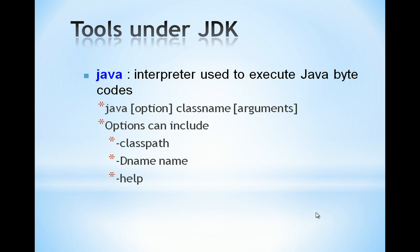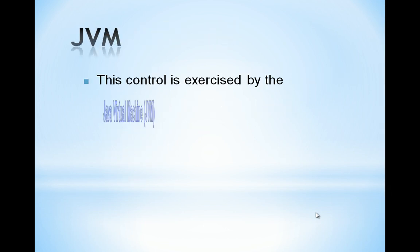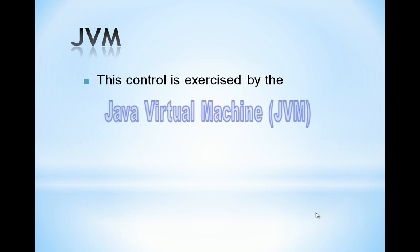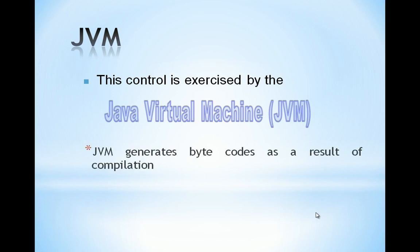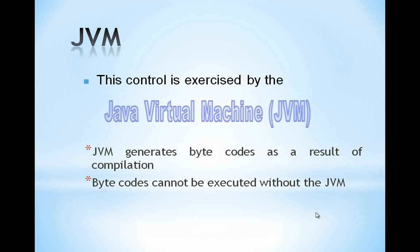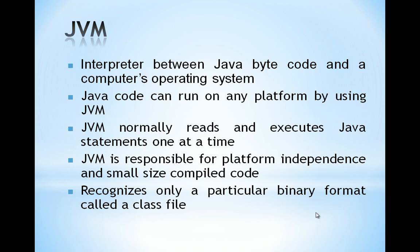The options refer to your class path or directory path. The main role in executing a Java program is played by the JVM — Java Virtual Machine. JVM generates bytecode as a result of compilation. Whenever you compile the program using the javac command, bytecode is generated. This bytecode cannot be executed without the JVM. In all operating systems, JVM is available by default, therefore on all operating systems you can run your Java program. JVM is the interpreter between the Java bytecode and the computer's operating system.